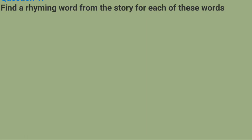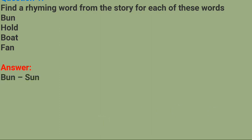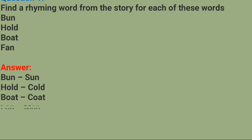Find a rhyming word from the story for each of these words. Bun → sun; hold (H-O-L-D) → cold (C-O-L-D); boat (B-O-A-T) → coat (C-O-A-T); fan → man. Sunny (S-U-N-N-Y) → funny (F-U-N-N-Y). Yeh rhyming words hain — inke last ki ek doosre se match karti hai pronunciation.